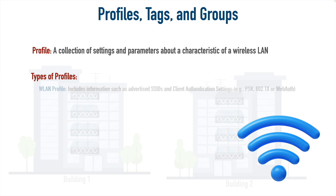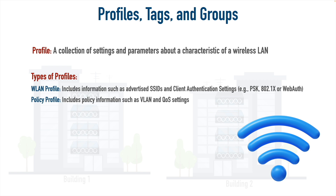One type of profile is a wireless LAN profile, sometimes called an SSID profile, because it controls what SSIDs or wireless network names get advertised. It controls things such as how the client authenticates — whether using a pre-shared key, 802.1x to authenticate with a RADIUS server, or web auth. Another type is a policy profile, which contains information about VLANs and quality of service settings. There's also the AP profile, or AP join profile, which can have information about CAPWAP settings such as various timers, and power over Ethernet settings.